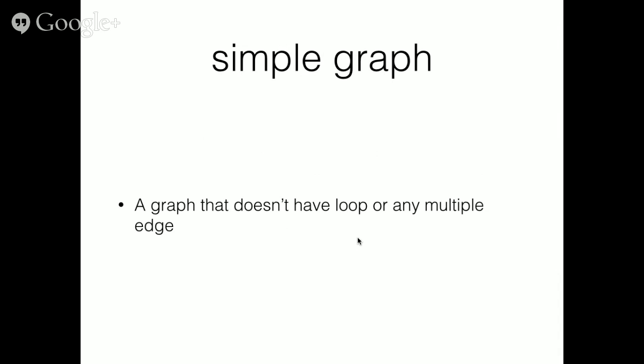As we know what are the multiple edges and what are the cycles and loops, we can define a simple graph. A simple graph is a graph that doesn't have any loop or any multiple edges.